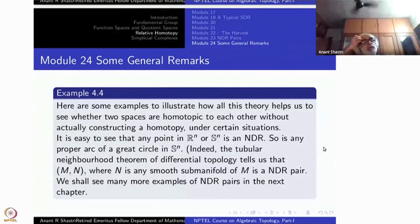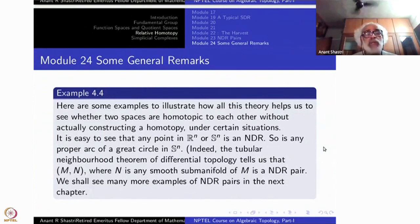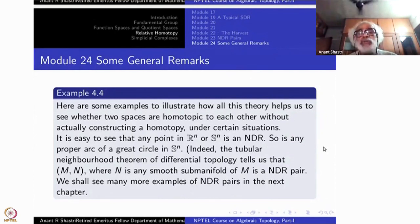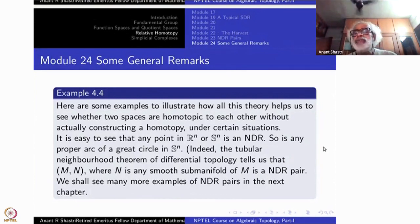In this module, we will try to sum up a number of things that we have done about relative homotopy. In particular, I will try to illustrate how this theory helps you to see that two given spaces are homotopic — whenever they are, of course — in many somewhat easy situations, without writing actual homotopy maps.